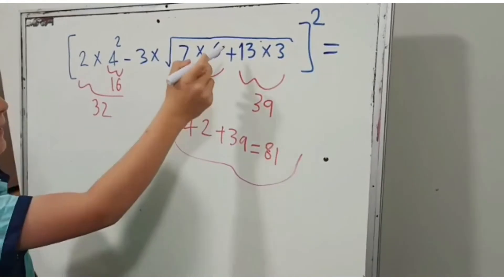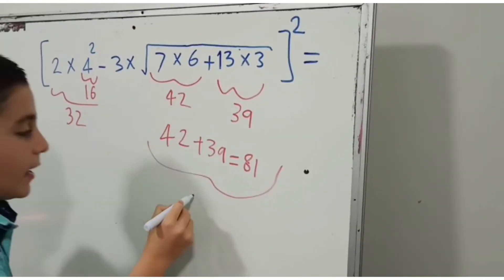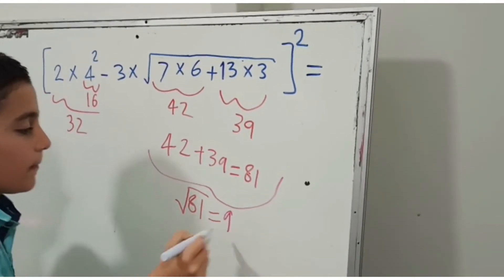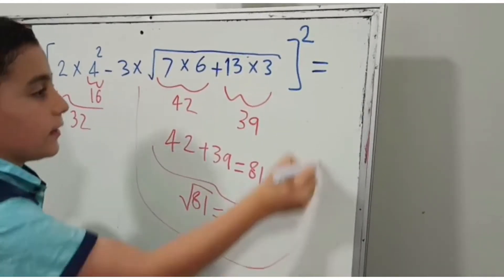We can't forget about the under root. The under root of 81 is 9. So now all this part is 9.